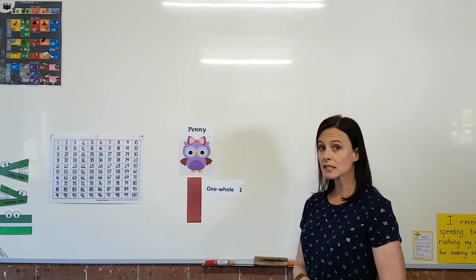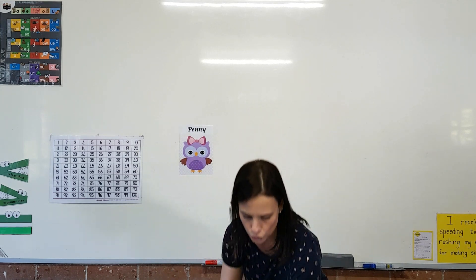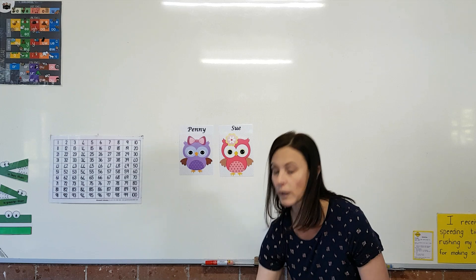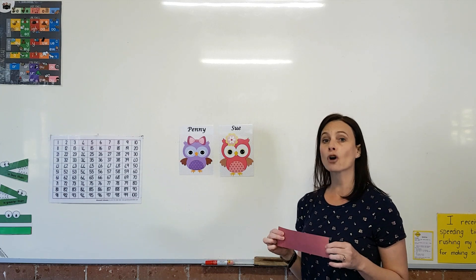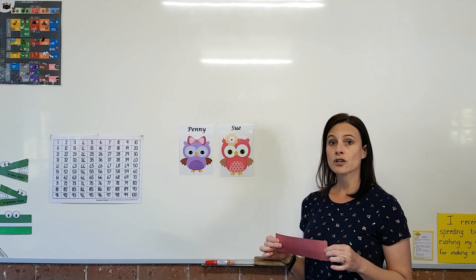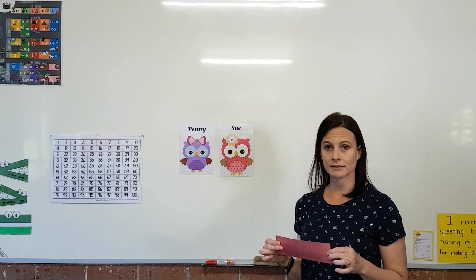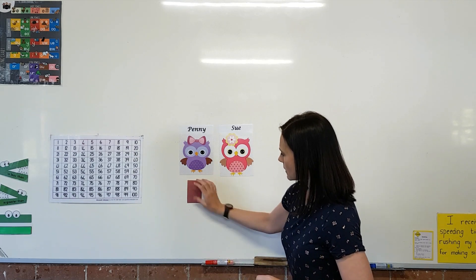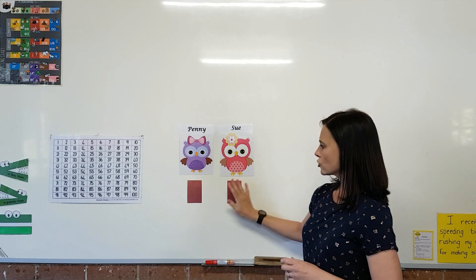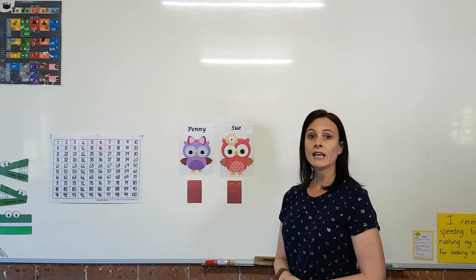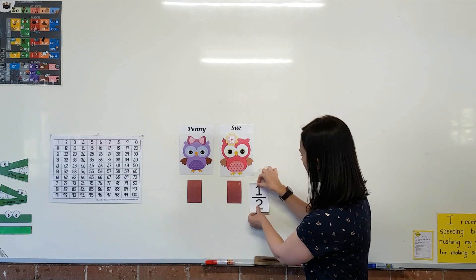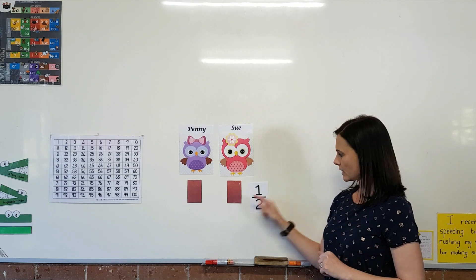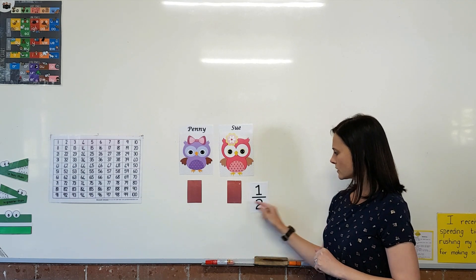But Penny is lonely so I've decided to give her a friend, and her friend's name is Sue. So we have Penny and we have Sue, but I only have one chocolate bar. Each girl wants a piece, so I need to cut the chocolate bar into two equal pieces so that Penny can get a piece and Sue can get a piece. If I look at this fraction it will look like this — we call this a half or one half. Each girl will get one piece of the two pieces of the chocolate bar.